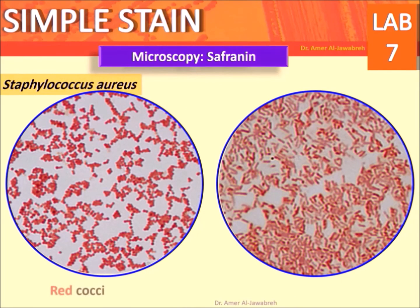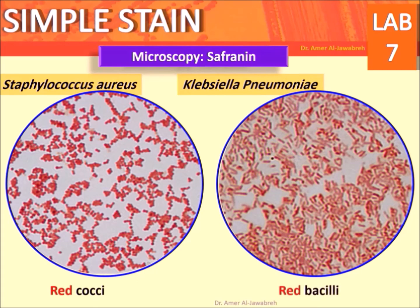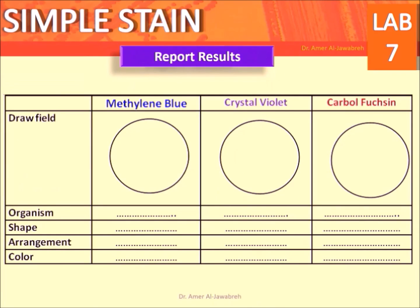Microscopy results — safranine: Staphylococcus aureus appears as red cocci. Klebsiella pneumoniae appears as red bacilli. Report results using this form.